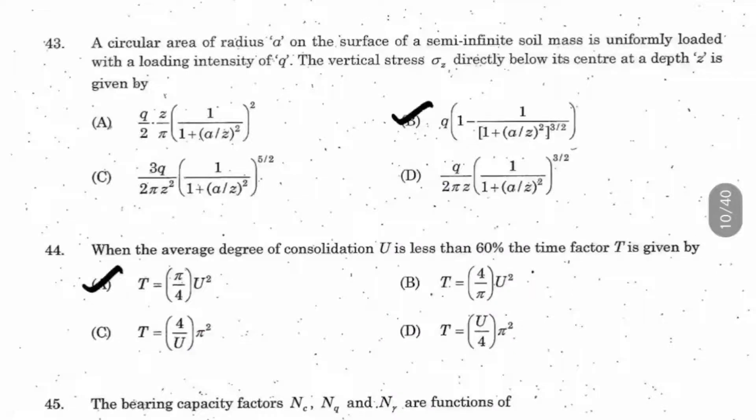Question number 43: A circular area of radius a on the surface of a semi-infinite soil mass is uniformly loaded with loading intensity q. The vertical stress sigma z directly below its center at depth z is given by what? This is stress distribution in soil mechanics for different shapes. For circular footing, we studied Boussinesq method. The answer is B: q into 1 minus 1 by (a by z square) to the power 3 by 2.